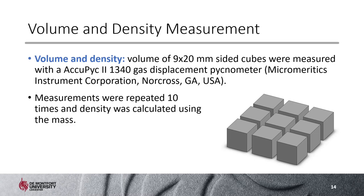For volume and density measurements, the samples were 20 mm-sided cubes — nine cubes in total. These samples were placed inside a gas displacement pycnometer to determine their volume; each measurement was repeated 10 times and averaged. For each blend, the volumes of nine samples were averaged to determine the average volume, and using the average mass of the specimens, the density was also calculated.